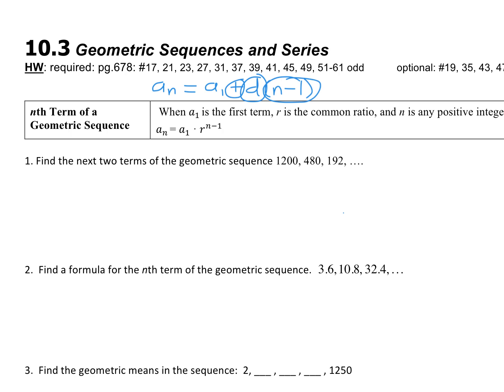For number one, we want to find the next two terms. The way we found the common difference was taking the second number and subtracting the first. For a geometric sequence, you find the common ratio by taking the second number and dividing by the first. We can cross out a trailing zero — 48 and 120 are both divisible by 24. So the common ratio is two-fifths.